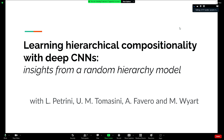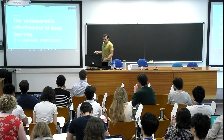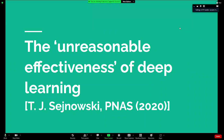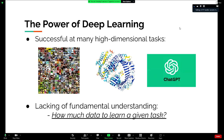This is joint work with my group at EPFL. The general setting of the talk is understanding the success of deep learning, as put by this paper — 'The Unreasonable Effectiveness of Deep Learning.' There is a striking difference between the huge success of deep learning at many tasks — ImageNet, GPT — and the lack of fundamental understanding of why these methods are so successful. One specific question I would really like to answer is: how much data do you need to learn a task once you know the task?